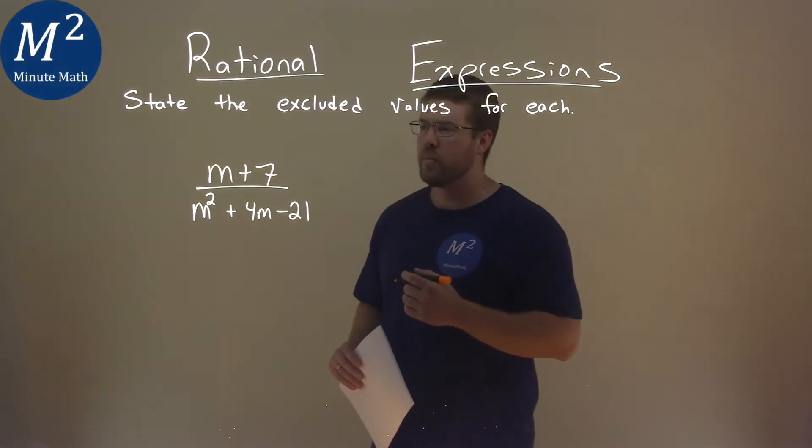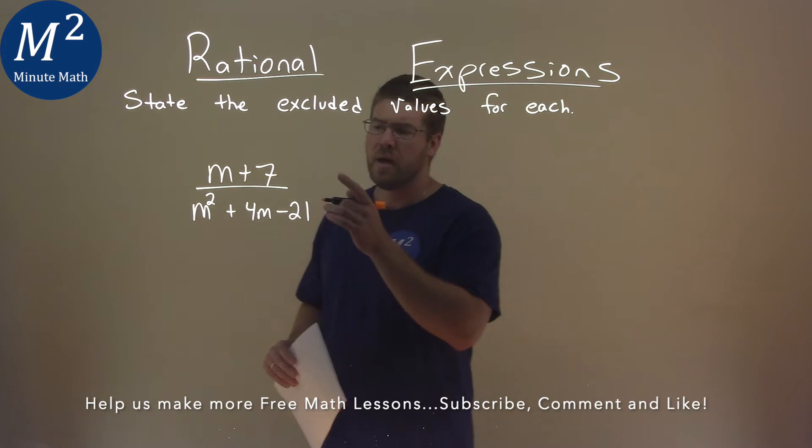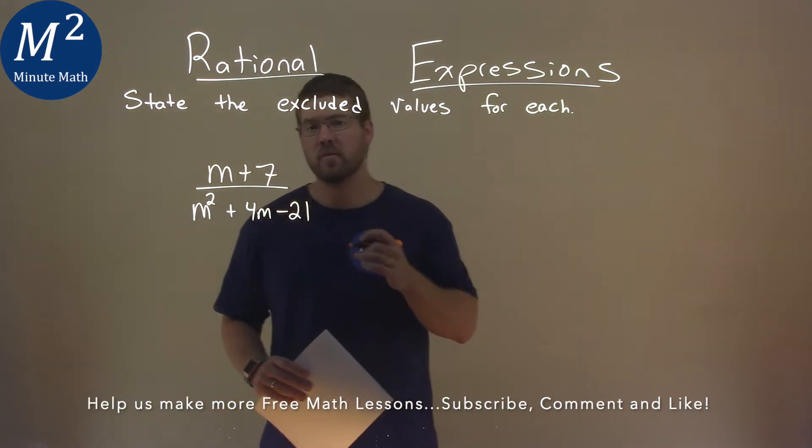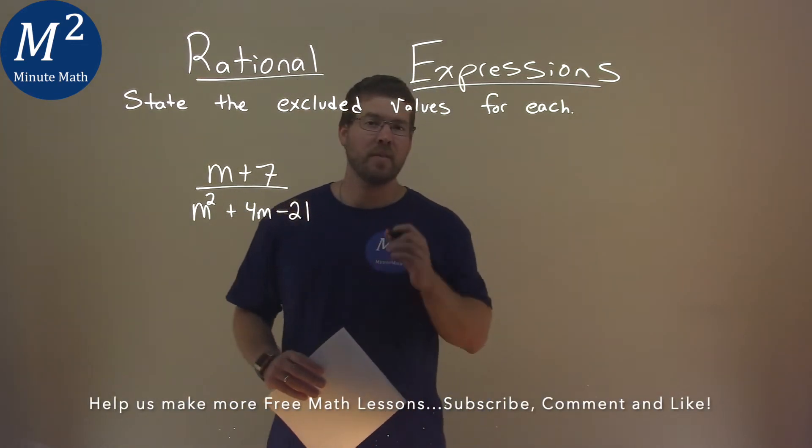We're given this problem right here, m plus 7 over m squared plus 4m minus 21, and we need to find the excluded value here.